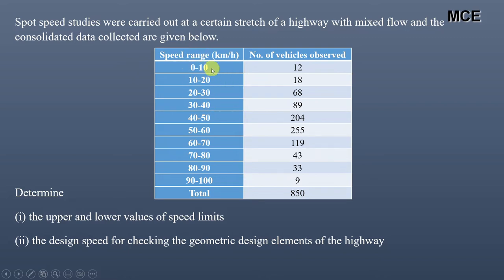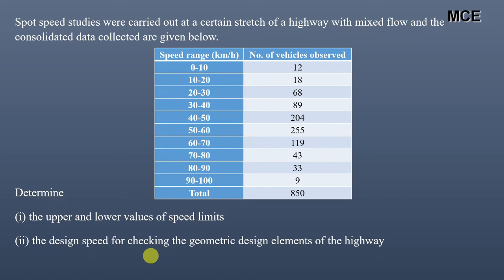You can see the speed ranges in the first column and the number of vehicles observed in the second column. We have to determine the upper and lower values of the speed limits and the design speed for checking the geometric design elements of the highway. We will find the cumulative frequency for each speed range, then plot a graph between the mid speed and cumulative frequency to find the speed limits and design speed. All calculations will be performed in Excel.